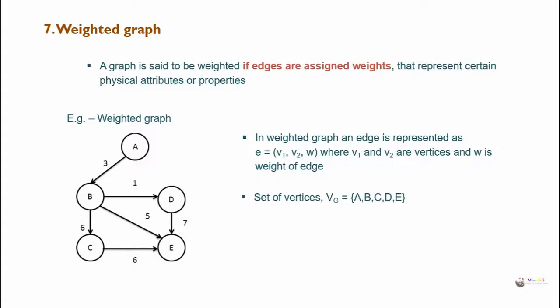Example for weighted graph: the set of vertices V = {a, b, c, d, e}. The set of edges with weights: (a,b,3) indicates an edge from a to b with weight 3. From vertex b: edges (b,c,6), (b,d,1), (b,e,5). From vertex c to e: (c,e,6). From vertex d to e: (d,e,7). There is no edge going out from vertex e.